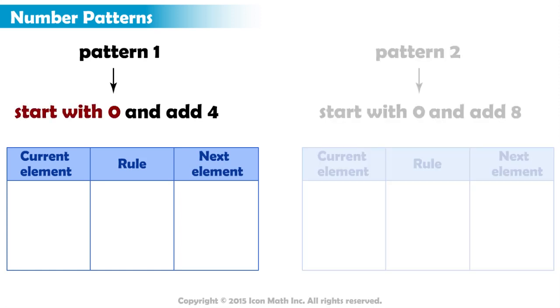The first pattern starts with zero, so we write zero in the first column. And its rule says add four. This means we add four to the current element. So we write zero plus four in the second column. The value of the expression goes into the next column. So we write four over there.